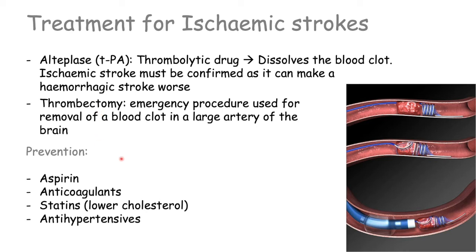Patients who have an ischemic stroke will also receive medications for the prevention of future strokes. This includes aspirin as a blood thinner, anticoagulants specifically for patients with atrial fibrillation or a previous history of DVTs, statins to lower cholesterol, and antihypertensives to decrease blood pressure.